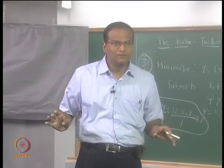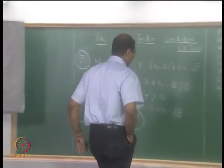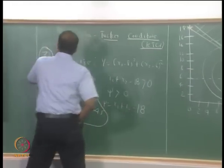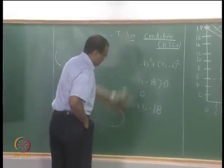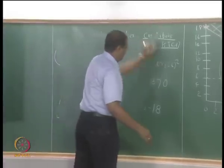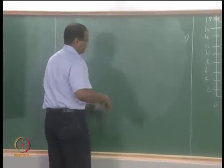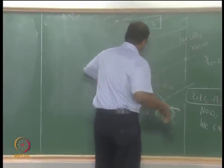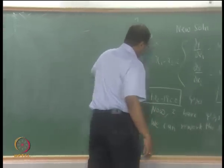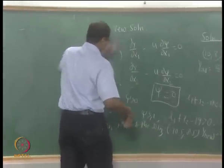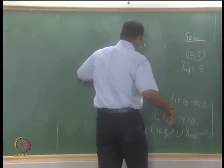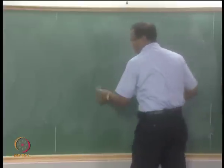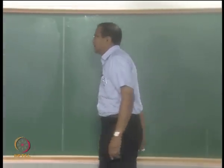Now it is clear why u is positive. We will close our discussion on Lagrangian multipliers with this and start a new chapter: search methods.